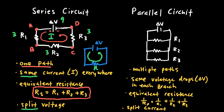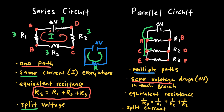In a parallel circuit there are multiple paths. Current coming out of the battery can choose to go through the top branch, or down to the bottom branches. What's different about a parallel circuit is that each branch has the same voltage. The voltage between points A and B equals the voltage between C and D, which equals the voltage between E and F — because each branch is connected directly to the two terminals of the battery.